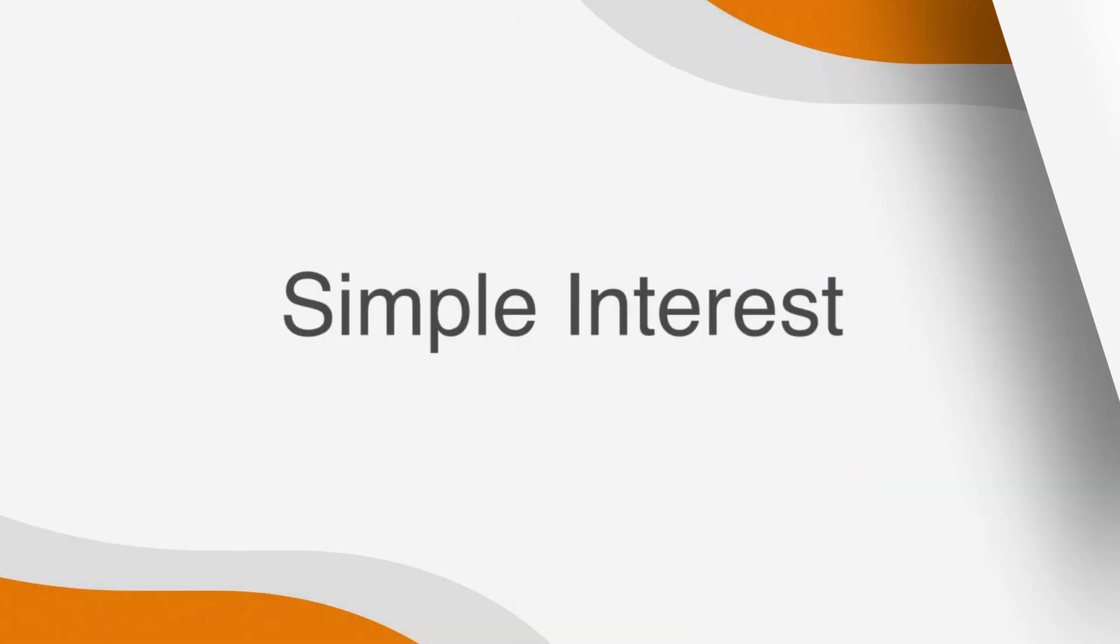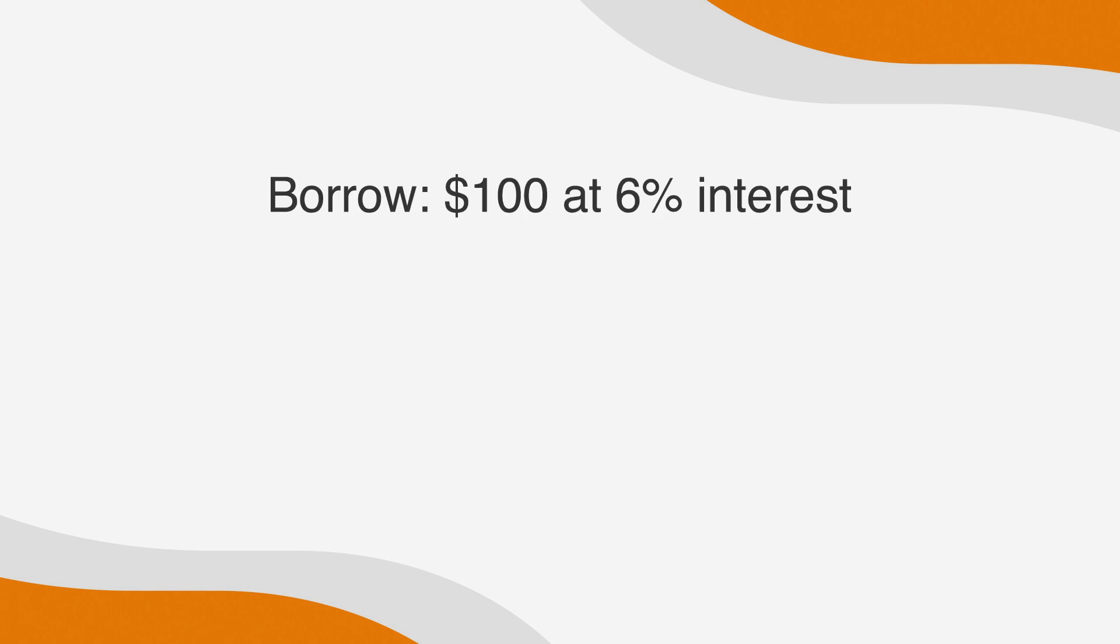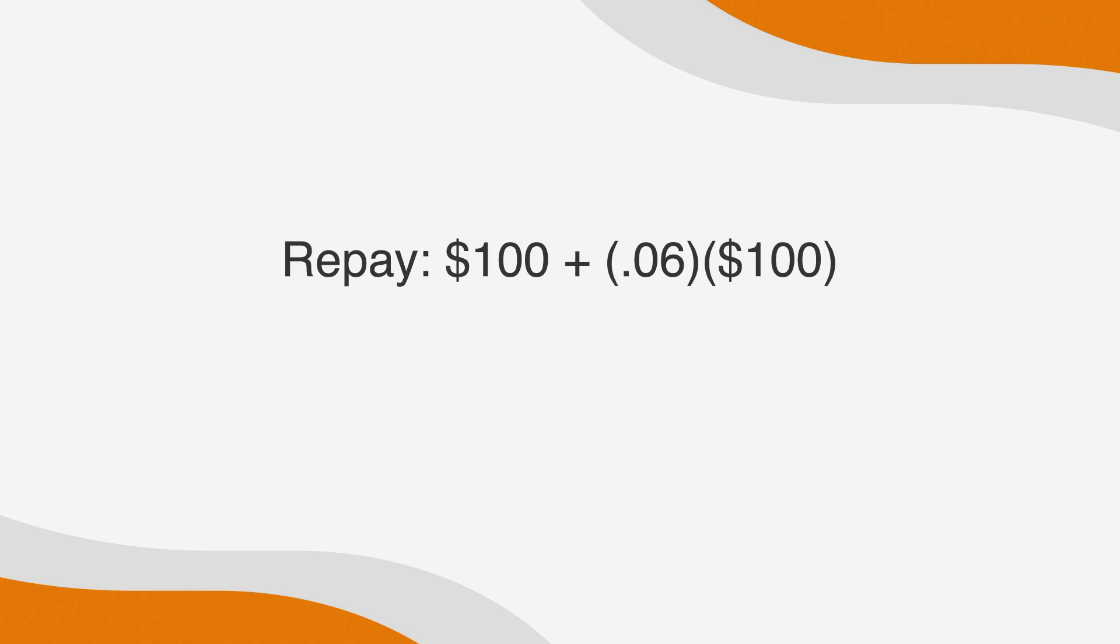Let's start with simple interest. If you borrow $100 at 6% interest, the $100 is your principal. You'll have to pay all of the principal, the full $100 back, plus an additional 6% of the principal. We can express 6% as a decimal, .06, and we know that the principal is $100. So our repayment equation will be 100 plus .06 times 100, which means you will pay back $106. Not so hard, right?